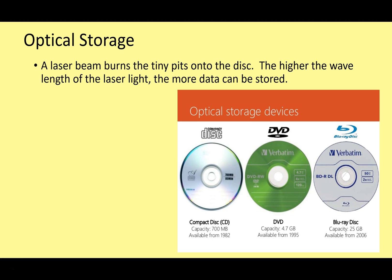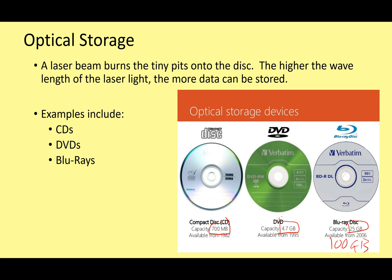Optical storage uses a laser beam to burn tiny pits of data onto a disk. Where pits are burned, it's a one; where data isn't burned, it's a zero. The higher the wavelength of the laser light, the more data can be stored. A CD stores about 700 megabytes, a DVD stores 4.7 gigabytes, and Blu-ray stores 25 gigabytes. Modern quad-layer Blu-ray systems can hold 100 gigabytes on a disk, though they only work on more modern drives. CDs, DVDs, and Blu-rays are all examples of reading and writing data using laser light.